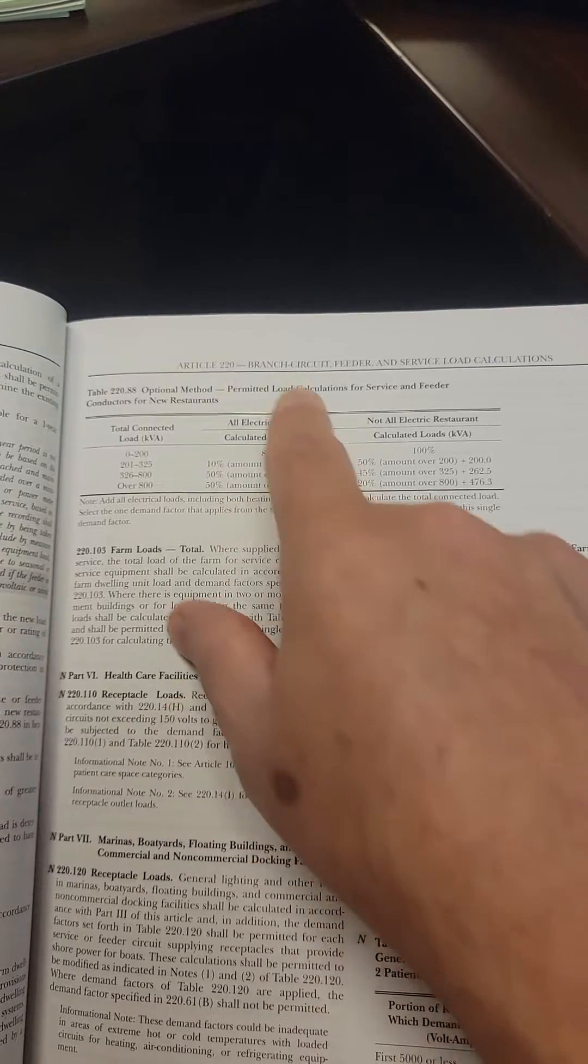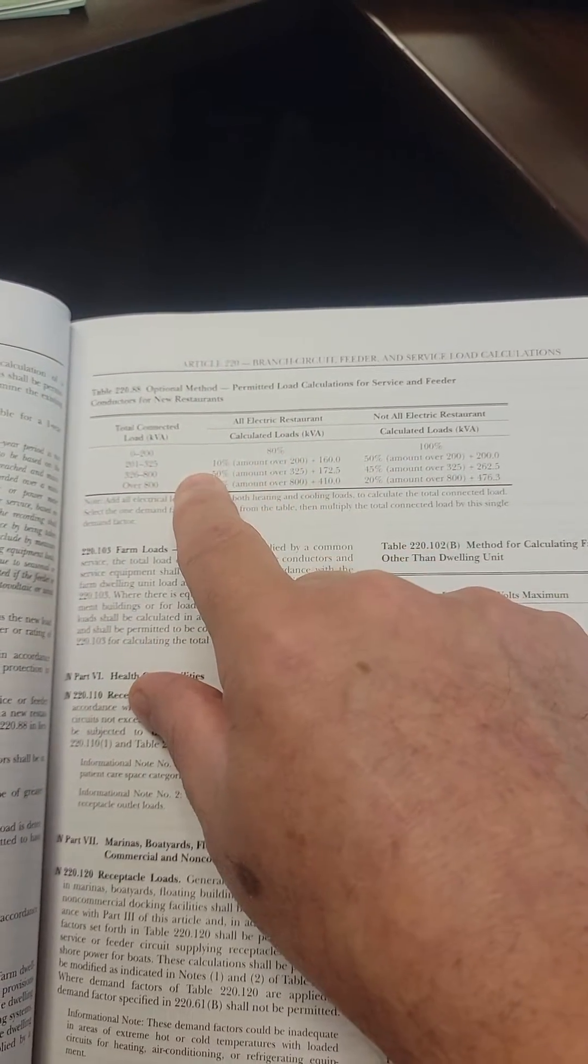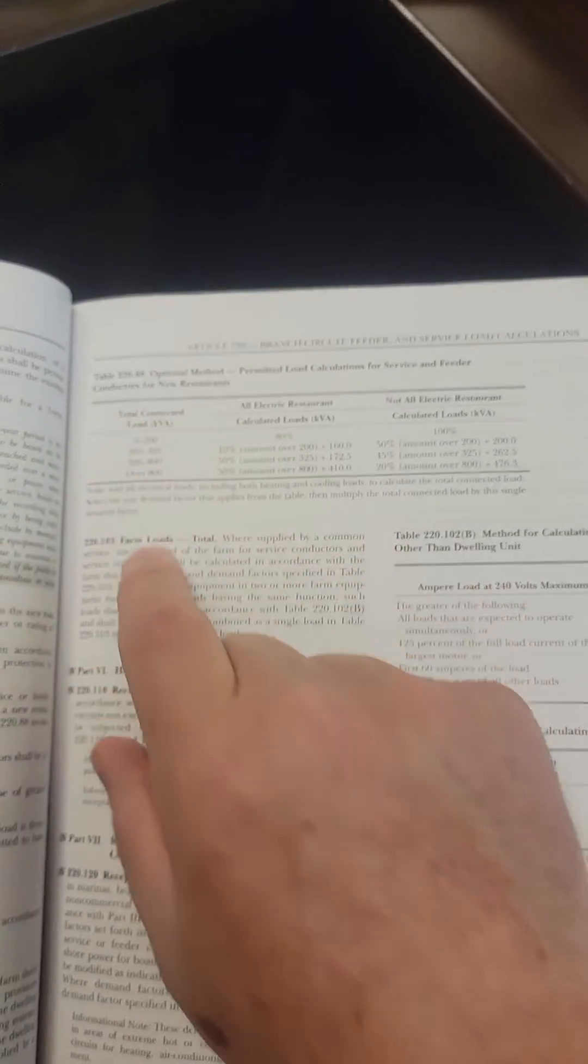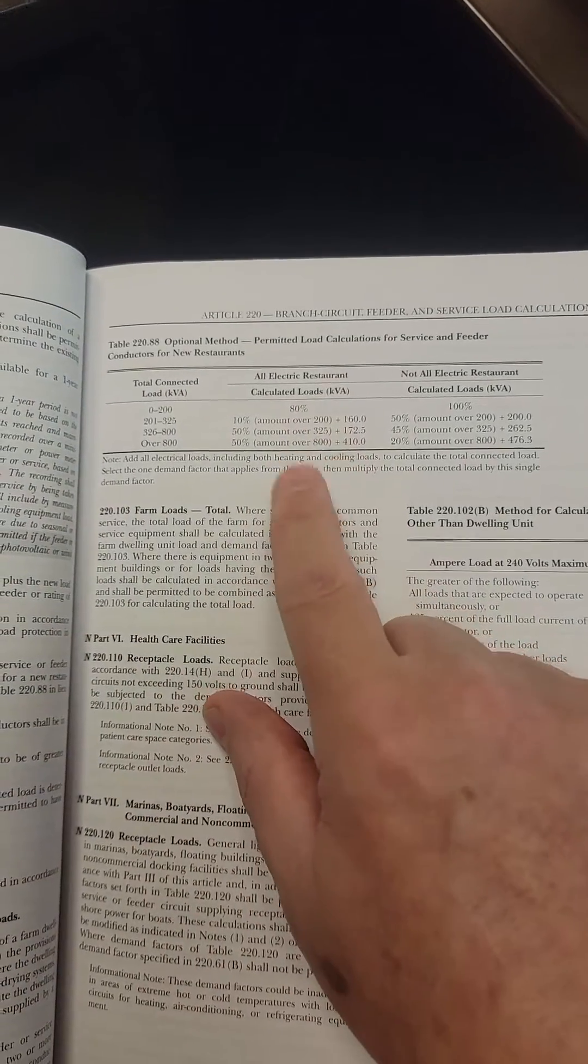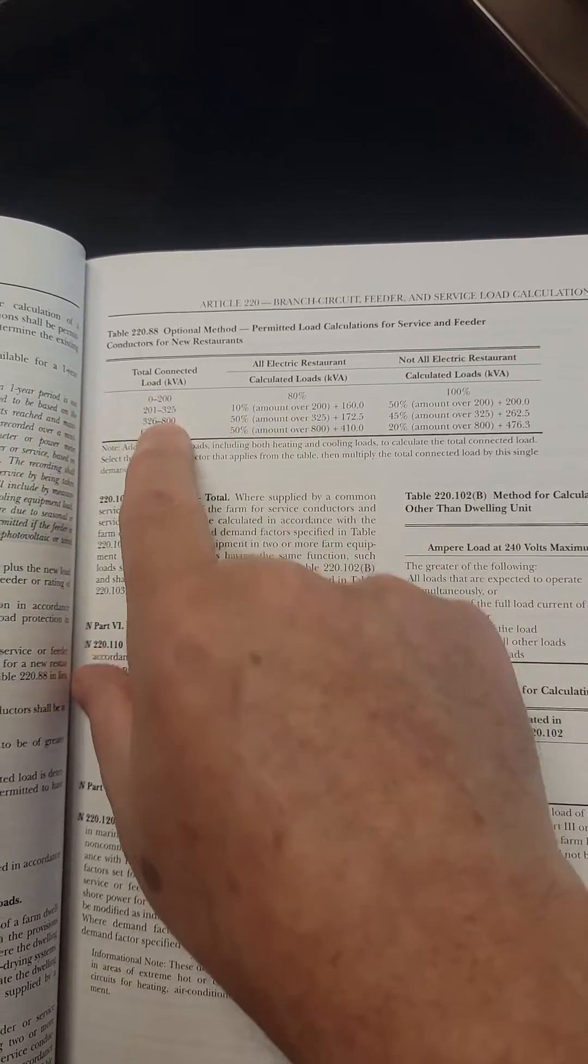So in that restaurant, your engineer or the exam question is going to have done that already for you, and they're going to give you a connected load. And then you're going to have to use this table to formulate the calculated load. But again, you don't stack these.